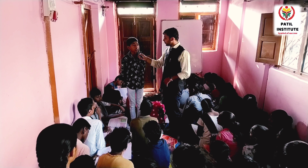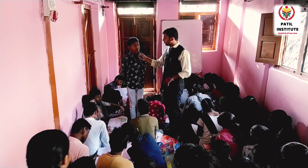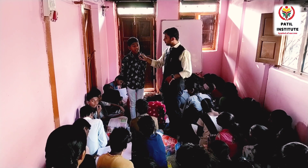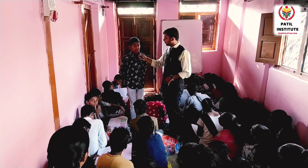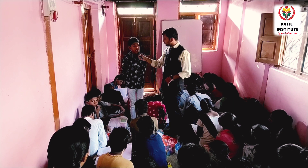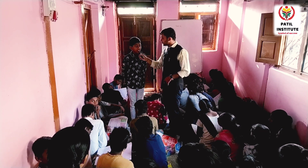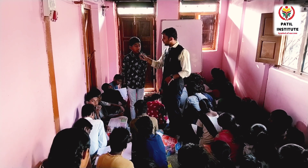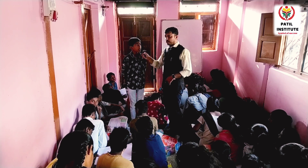Organisms can be unicellular prokaryotic, unicellular eukaryotic, and multicellular — these are the three types. Examples include fungi, plants, and animals.